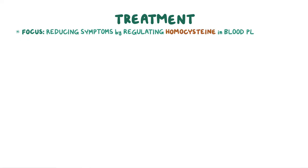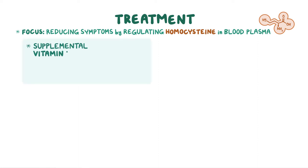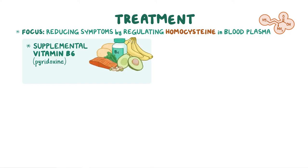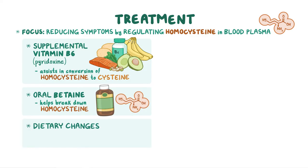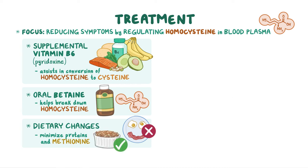Treatment focuses on reducing symptoms by regulating the amount of homocysteine in blood plasma. The first treatment used to control homocysteine levels is supplemental B6, or pyridoxine. Vitamin B6 assists in conversion of homocysteine to cysteine, so increased B6 may lower homocysteine levels. Individuals who do not get better with supplemental B6 alone may require an oral medication called betaine, which helps to break down homocysteine. If symptoms persist, dietary changes might be suggested to minimize consumption of proteins and methionine by limiting animal proteins, such as bacon and eggs, and replacing them with more plant-based proteins, like beans.